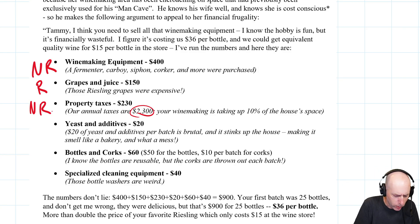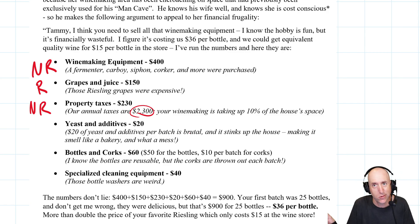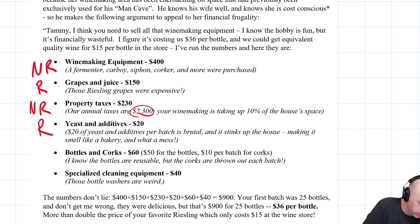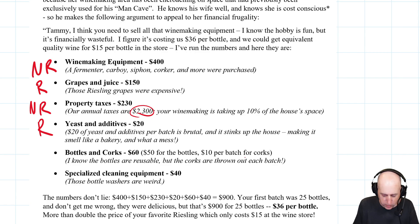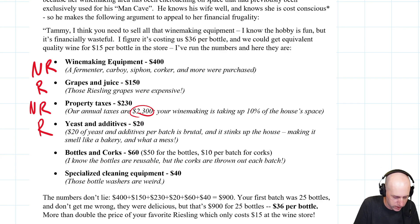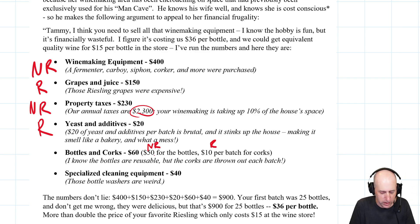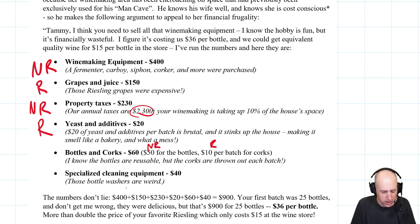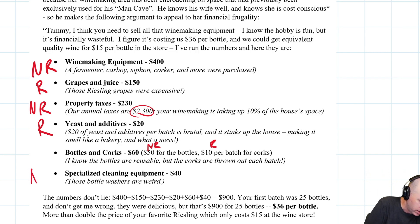Yeast and additives — $20 of yeast and additives per batch. If she makes another batch, that's $20 more of yeast. That is relevant. Bottles and corks — interestingly, one of these is relevant and one is not. The bottles are reusable, so that's not relevant — you've already bought the bottles, it's a sunk cost. The corks, though, are relevant — you have to buy new corks for each batch, so that $10 is relevant. Specialized cleaning equipment, $40 — you already own the bottle washer, so that's a sunk cost and not relevant.